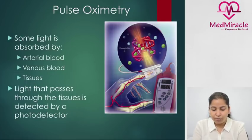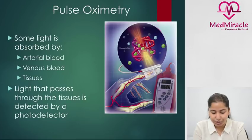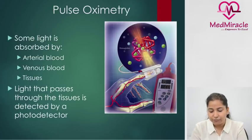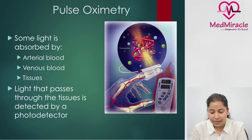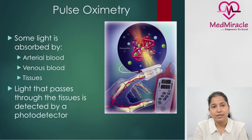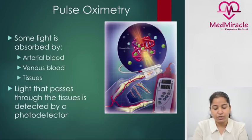Some light is absorbed by arterial blood, venous blood, and some by the tissues. The devices have been made in such a way that they capture the wavelength absorbed by arterial blood only, so it shows the oxygenated hemoglobin which is present.